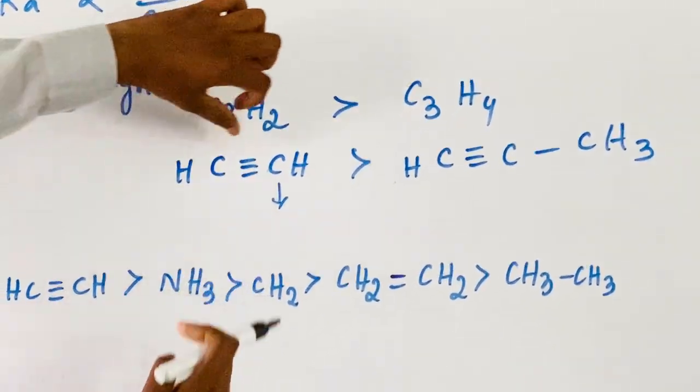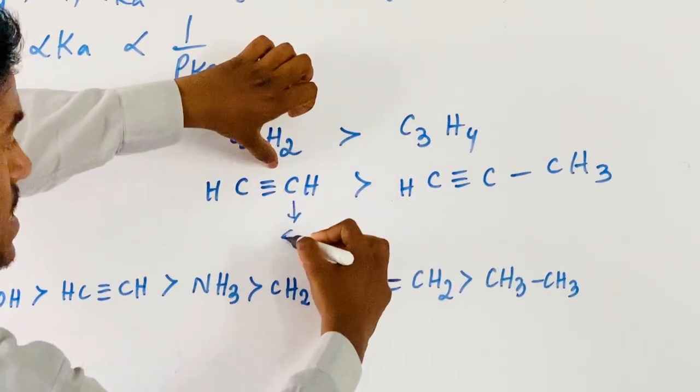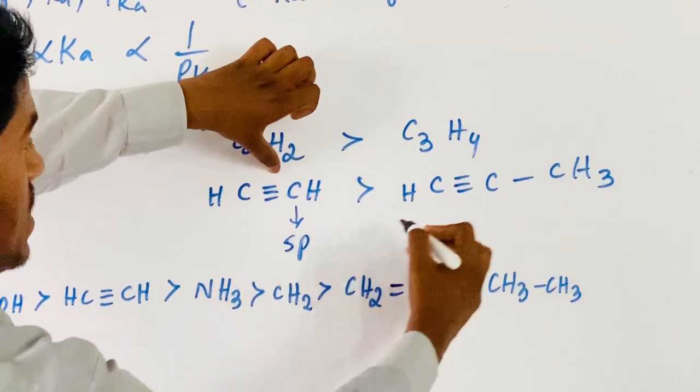The most electronegative carbon is the sp-hybridized carbon, which holds the hydrogen most tightly and donates it most readily as a proton, giving sp carbon the highest acidity.